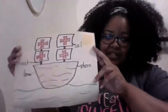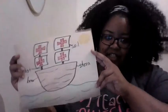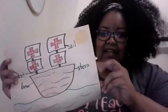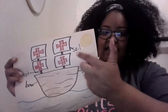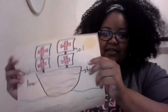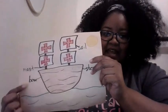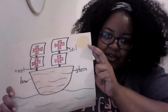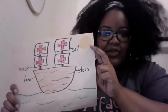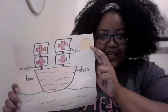For your assignment today, you're going to make your own exploring ship, like the Nina, the Pinta, and the Santa Maria. Here's my ship — I labeled all the parts: the stern, the sail, the mast, and the bow. You can try and draw your own ship that you would love to go exploring in.